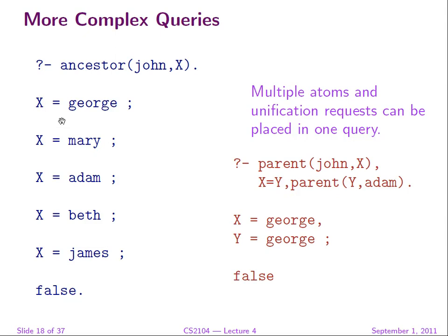The resolution algorithm is also very simple. We have a query with atoms A1, A2, ..., AN. We pick a rule from the program and rename its variables — and when we say pick, this is non-deterministic choice that we remember so we can come back and pick something else later. The fact is a special case of a rule where the body is completely missing. We take the head of the query and the head of the rule and create a unification request, then copy the body atoms, copy the remaining query atoms, and keep doing that until the query becomes empty.